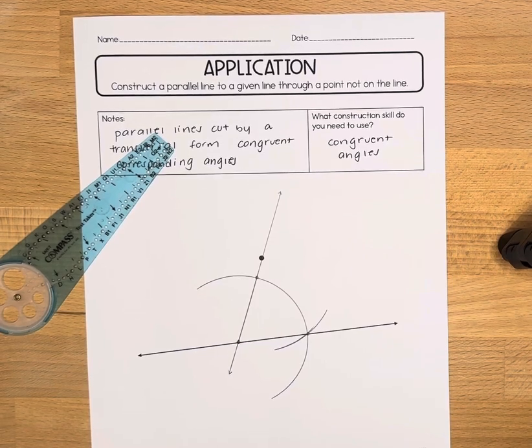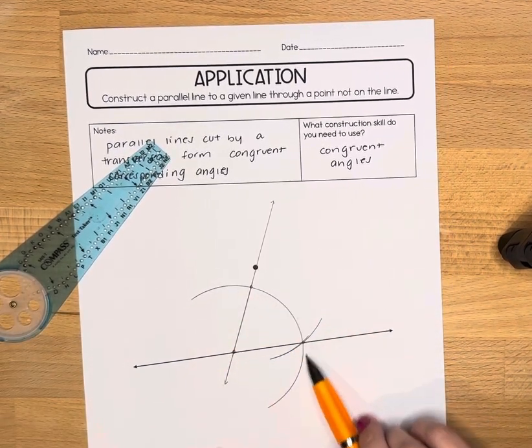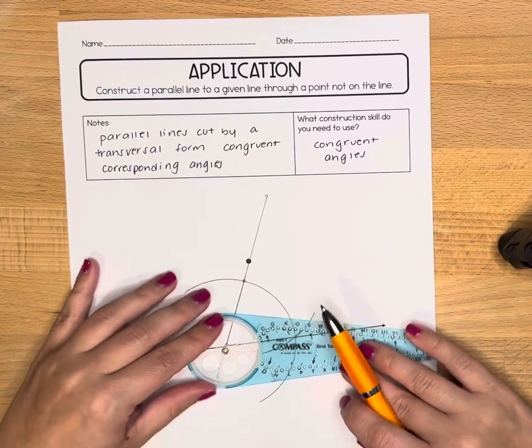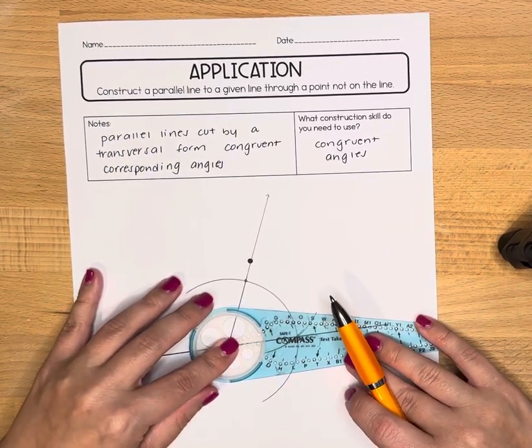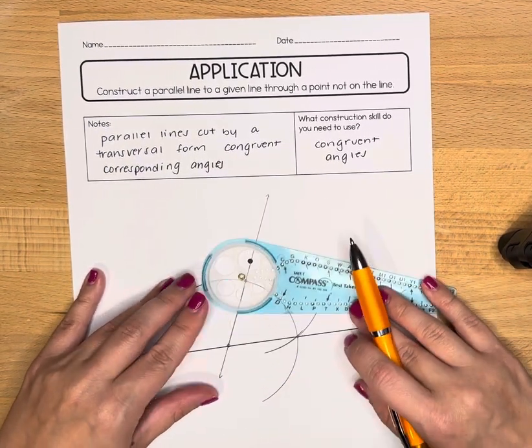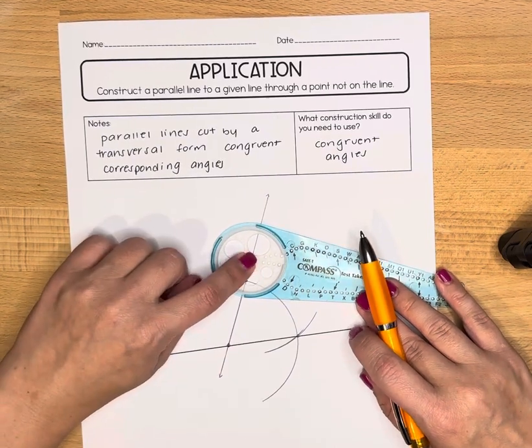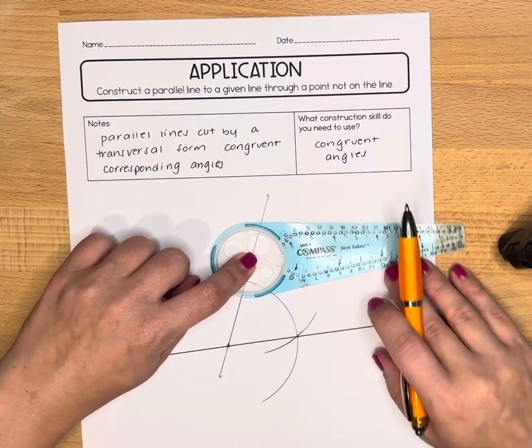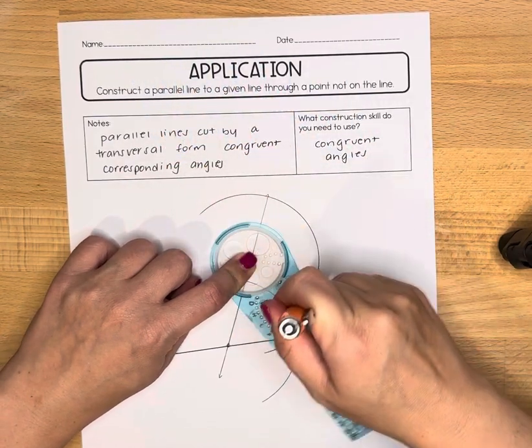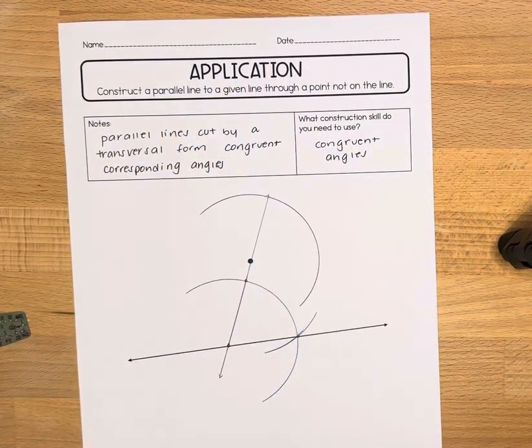Now we're going to repeat this process. So whatever we used for this big arc here, if you forget you're going to go back and line it up, put the gold ring of your compass on the initial point that the problem gave you, and you are going to use that measurement and draw another nice big arc.